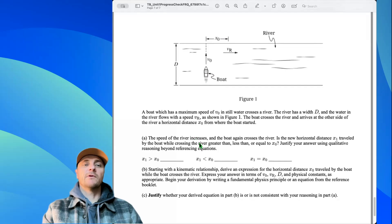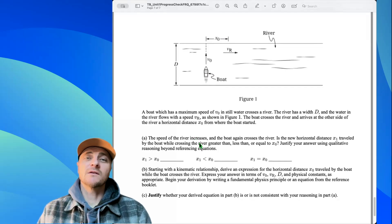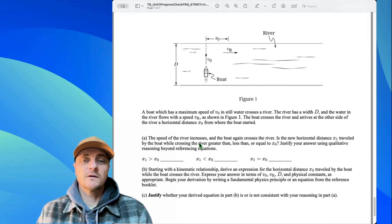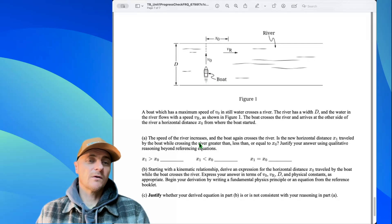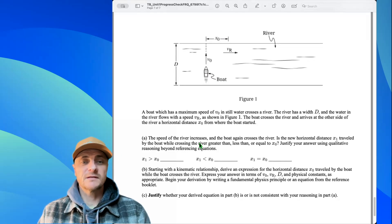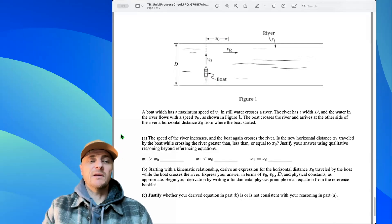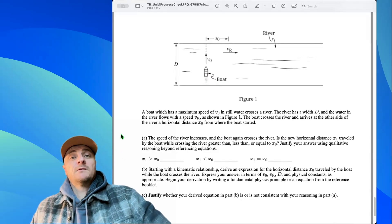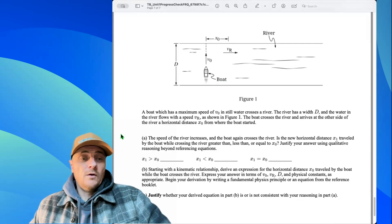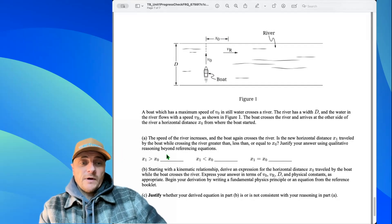So part A, the speed of the river increases, and the boat again crosses the river. Is the new horizontal distance traveled by the boat while crossing the river greater than, less than, or equal to x-naught? Justify your answer using qualitative reasoning beyond referencing equations. So we have to be descriptive. No problem. Let's go ahead and check the correct answer.